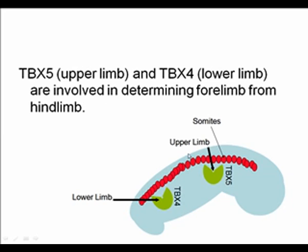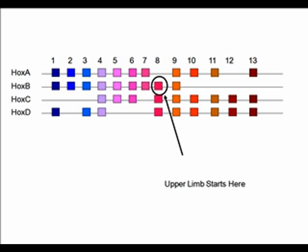One signal being investigated is what triggers the ectoderm and underlying mesoderm to be involved in limb development for both upper and lower limbs. While the signals are not fully clear, TBX5 and TBX4, for the upper and lower limbs respectively, appear to play a role in identifying the ectoderm and mesoderm of the limb bud regions. Additionally, certain Hox genes identify a particular constellation associated with the upper limb. While TBX and Hox genes do not cause limb development, they signal a region where that development is proceeding.